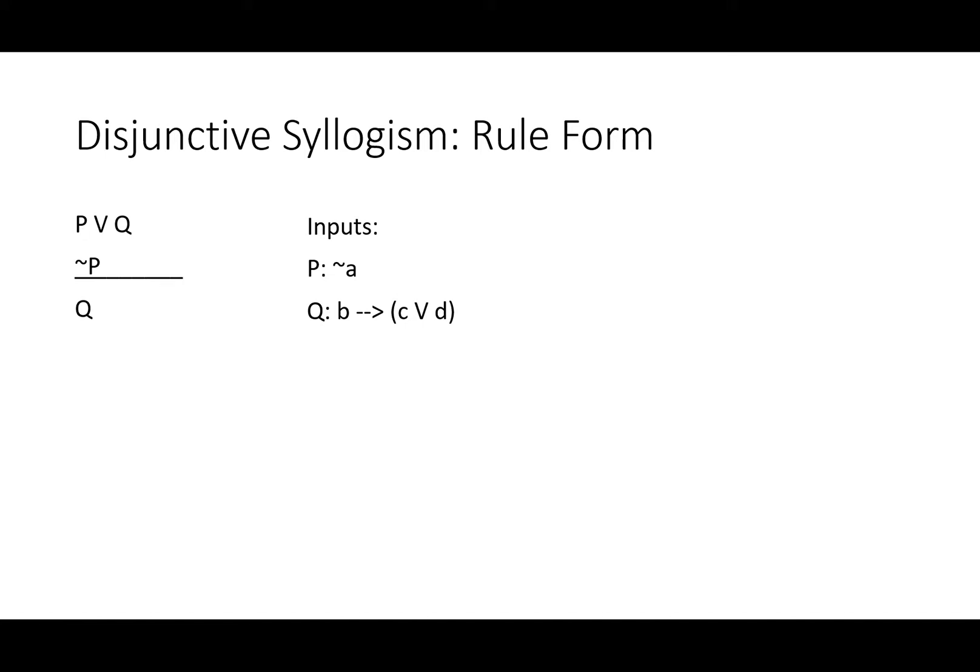Perhaps a longer sentence will be a little bit more instructive. Let's put in a negation, not A, for P. And then let's put in if B, then either C or D for Q. We get that as the output. Let's take a look at what we actually mean here. First of all, notice the V and the not are still our main operators. No matter how many extra operators get added in, those are the main ones.